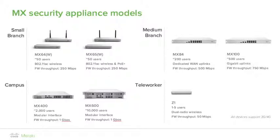At Meraki, we use the MX100 at our Sydney and London offices. The MX400 covers our head office. The MX400 and MX600 are our large campus devices — modular platforms supporting a range of interface types including copper giga, SFP giga, and SFP plus 10 giga. Redundant power supplies are included in both devices. Both have firewall and VPN throughput of one gigabit per second. The MX400 supports 2,000 users and the MX600 supports 10,000 users, with maximum connection counts of 1 million and 2 million respectively.